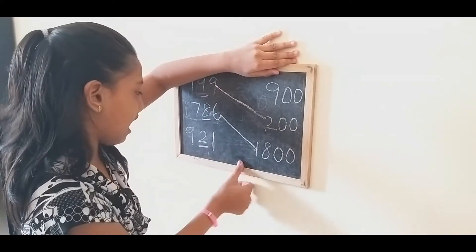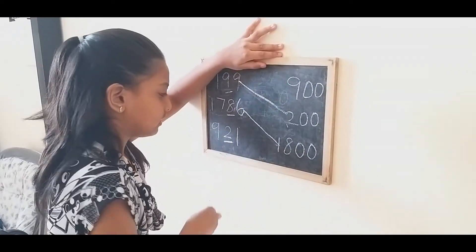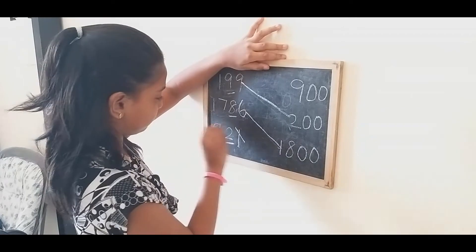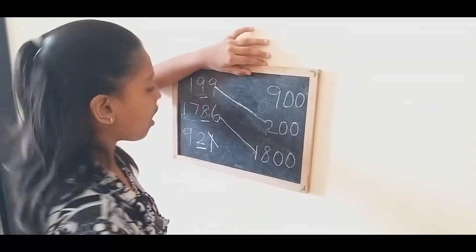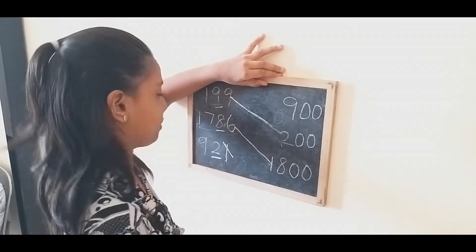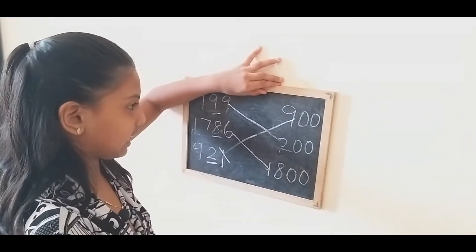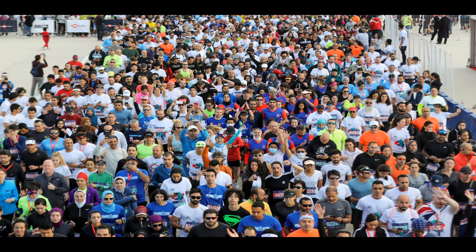This is nine hundred and twenty-one. Never mind the ones place. The tens place is 2, which is zero up to four, so we put zero and keep the other numbers the same. So the answer is nine hundred. We use rounding off to the nearest hundreds to count students in school and count people in crowds.